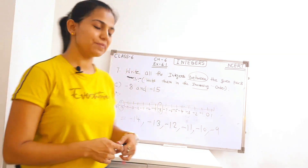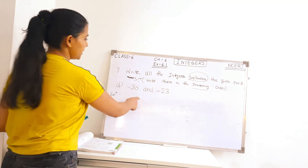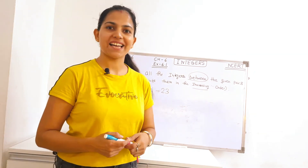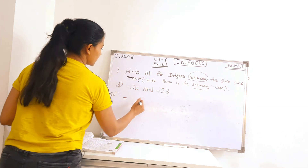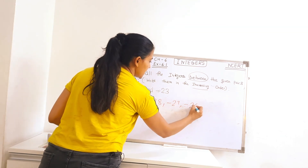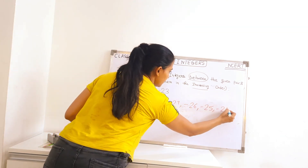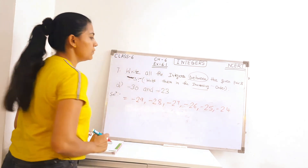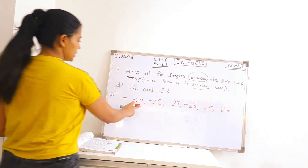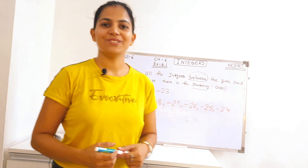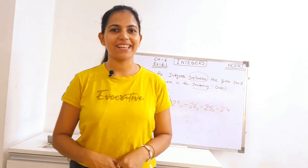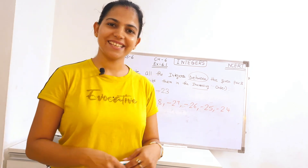Coming to part D. The numbers given are minus 30 and minus 23. This time, let's write it directly without drawing a number line. The integers between them, not including minus 30 and minus 23, are: minus 29, minus 28, minus 27, minus 26, minus 25, and minus 24. This is the increasing order on the number line. We'll do the remaining exercise in the next video. Till then, keep learning, keep exploring, and please subscribe to the channel. Thank you.